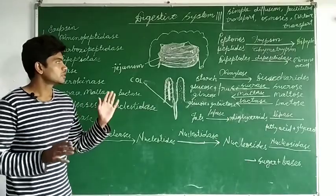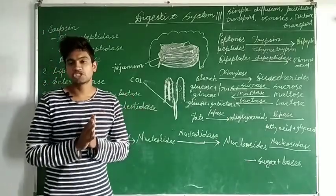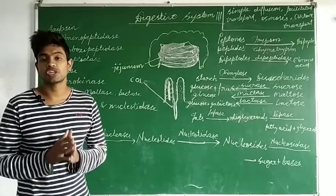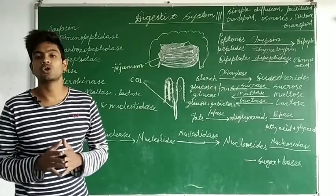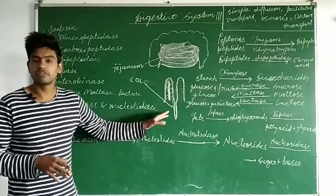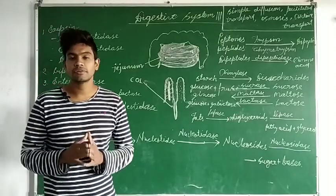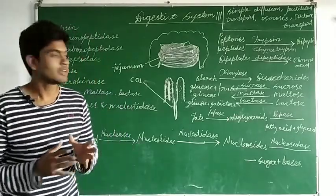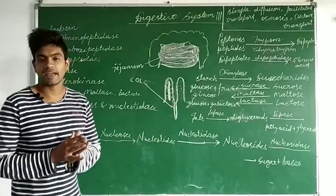The inner wall of the jejunum is lined with finger-like projections. These finger-like projections are called villi. Each one of them is called a villus, and each villus is supplied with a network of capillaries and a lymph vessel which is called a lacteal.